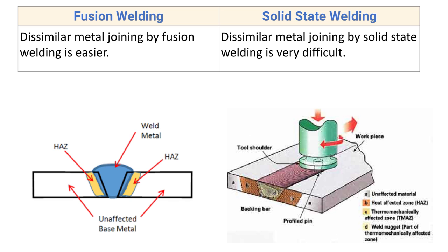Next point: dissimilar metal joining by fusion welding is easier. Fusion welding is one of the best joining processes because it produces a leak-proof and sound joint, even for dissimilar metals — though it is important to choose proper welding parameters when handling dissimilar metals. In contrast, dissimilar metal joining by solid state welding is very difficult.